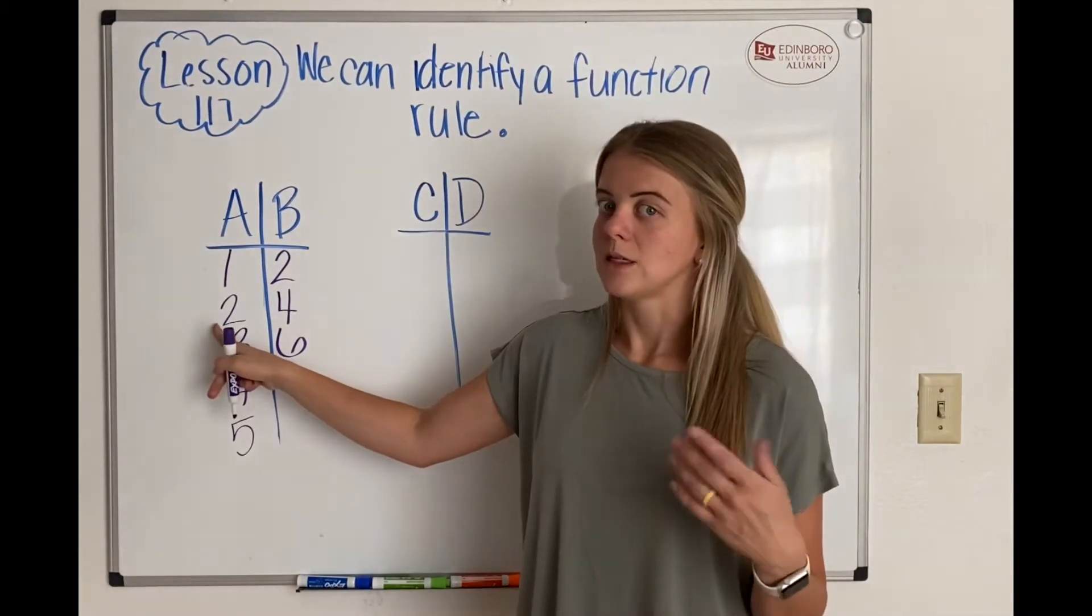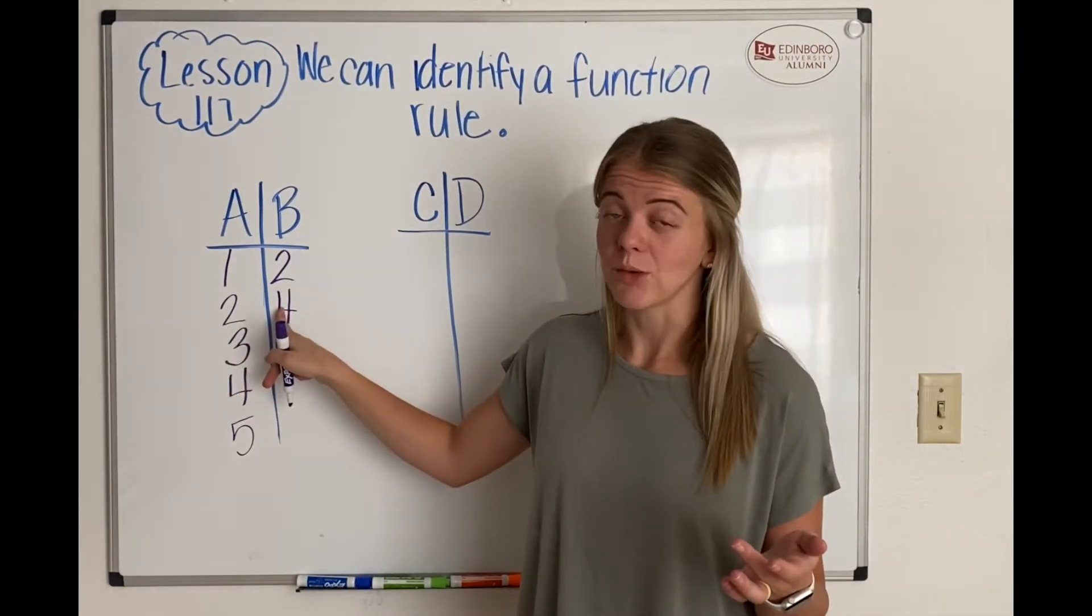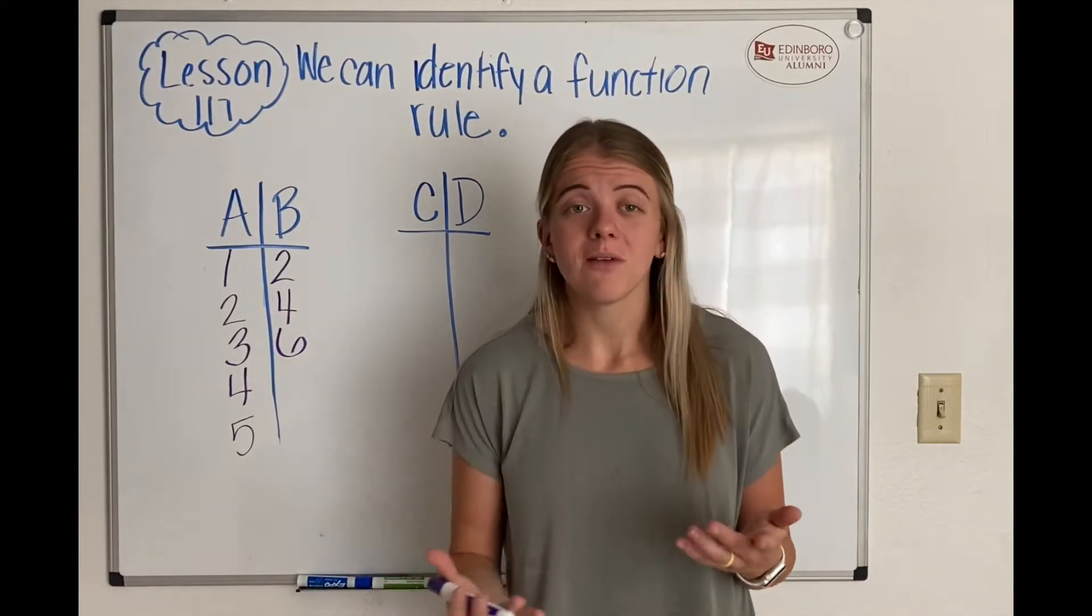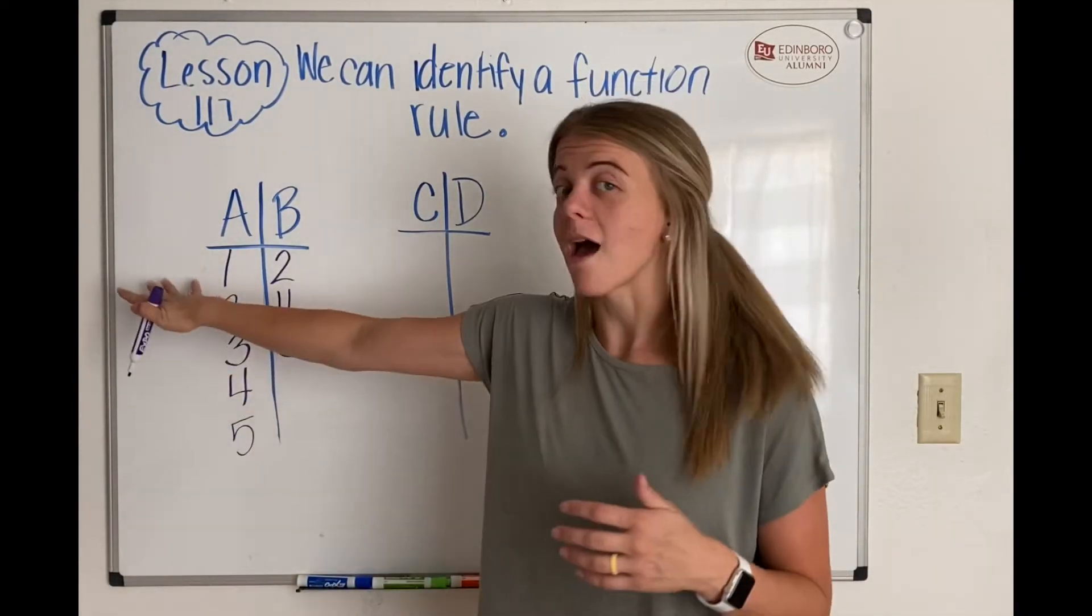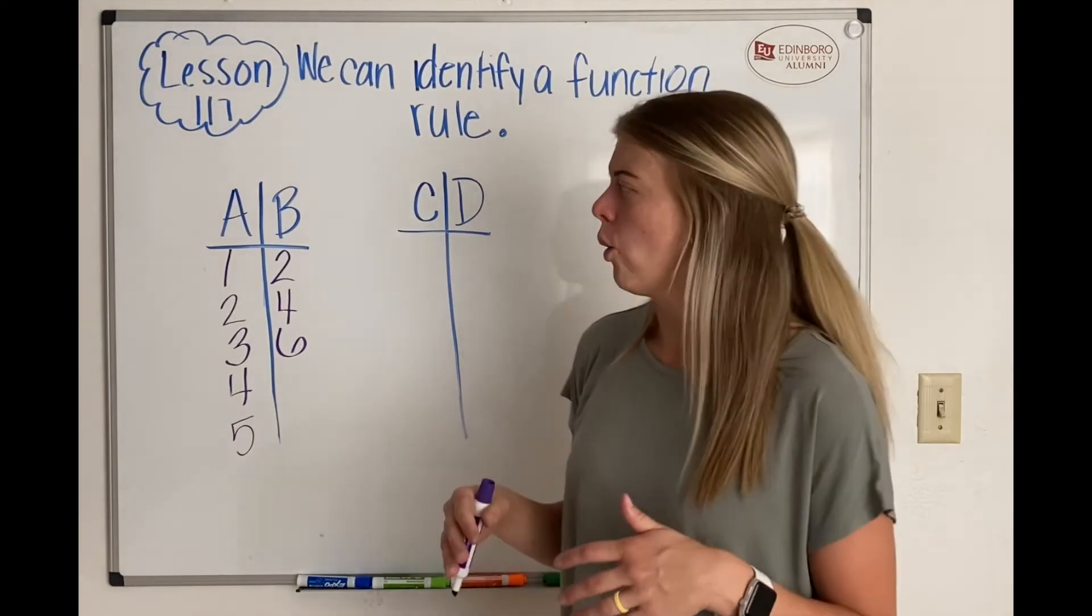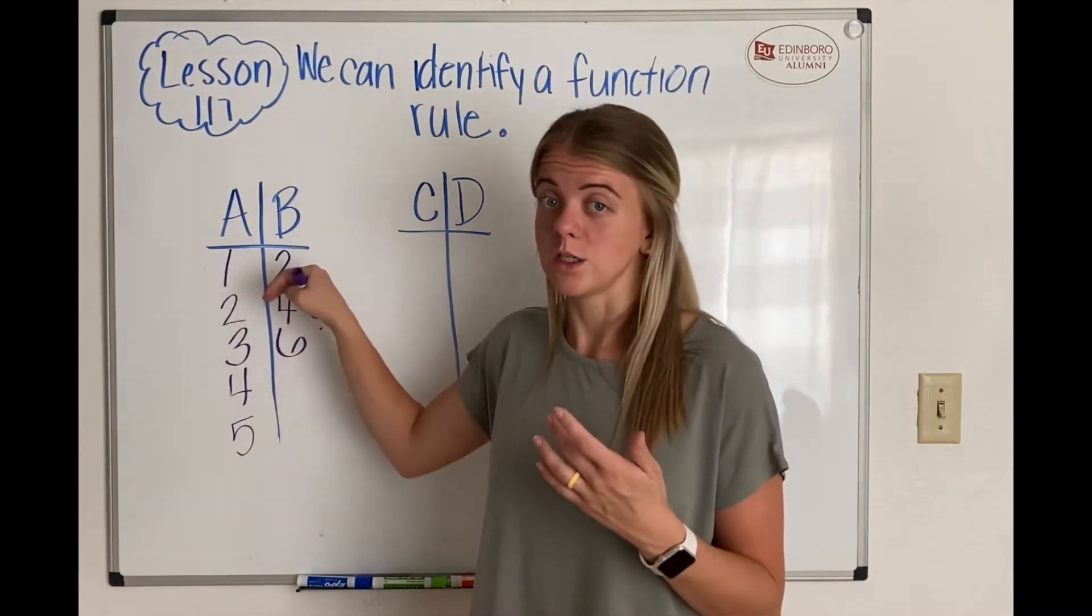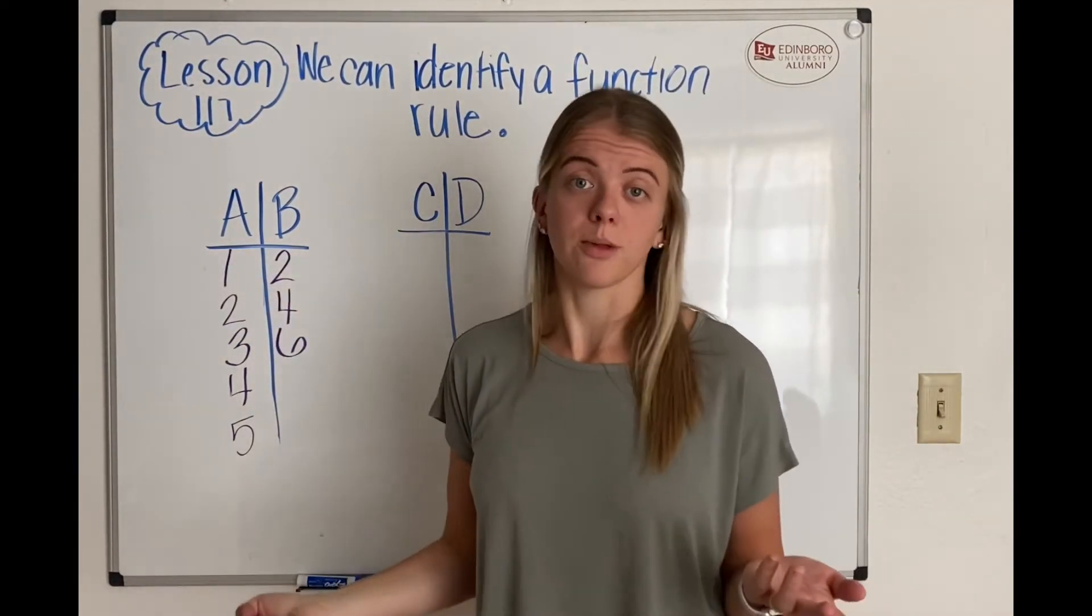2 plus 1 is 3. Doesn't equal 4. So we have to figure out now a different rule that works for every single one of these numbers. So how else can we get from 1 to 2? Well, we can multiply by 2.